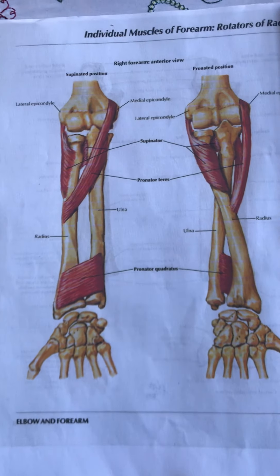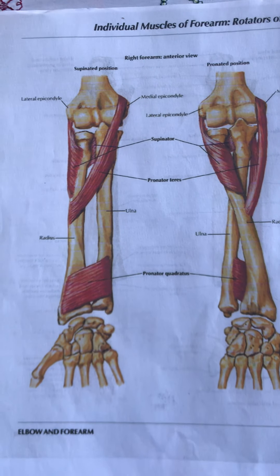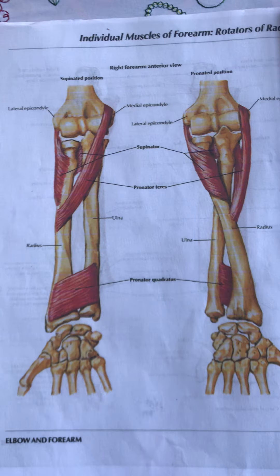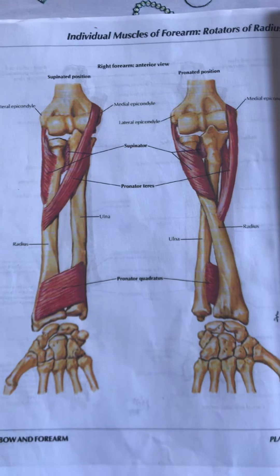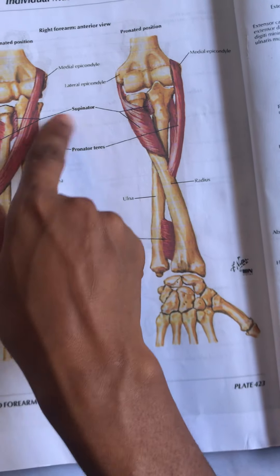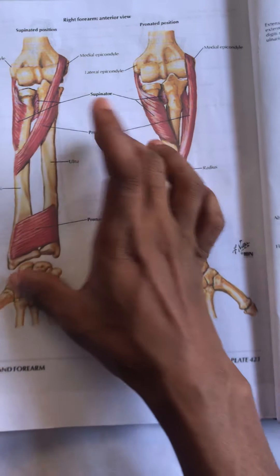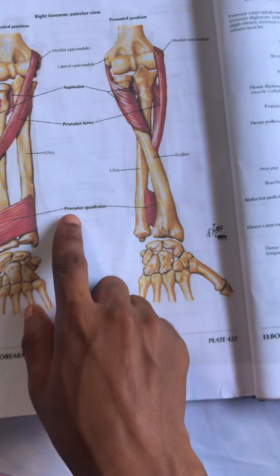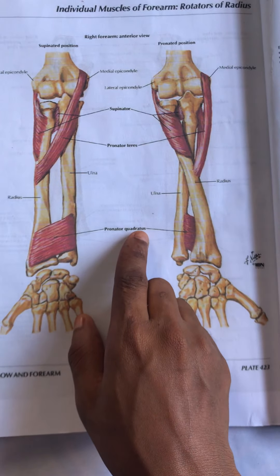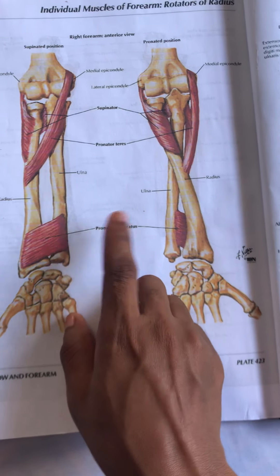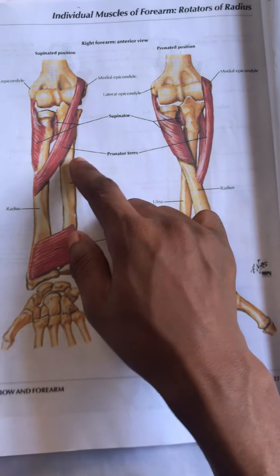Welcome again to my session. Today we are going to discuss the muscles of the forearm, specifically the muscles concerned with the pronation and supination of the forearm. We have three kinds of muscles: the first is the supinator, concerned with supination; and the second group is the pronator teres and the pronator quadratus muscles, concerned with pronation of the forearm.